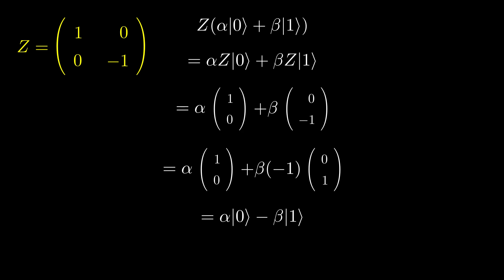Looking at this, you may be thinking, what is the point of the Z gate? This qubit still has an alpha squared chance of being 0, and a beta squared chance of being 1. It didn't affect their probabilities.